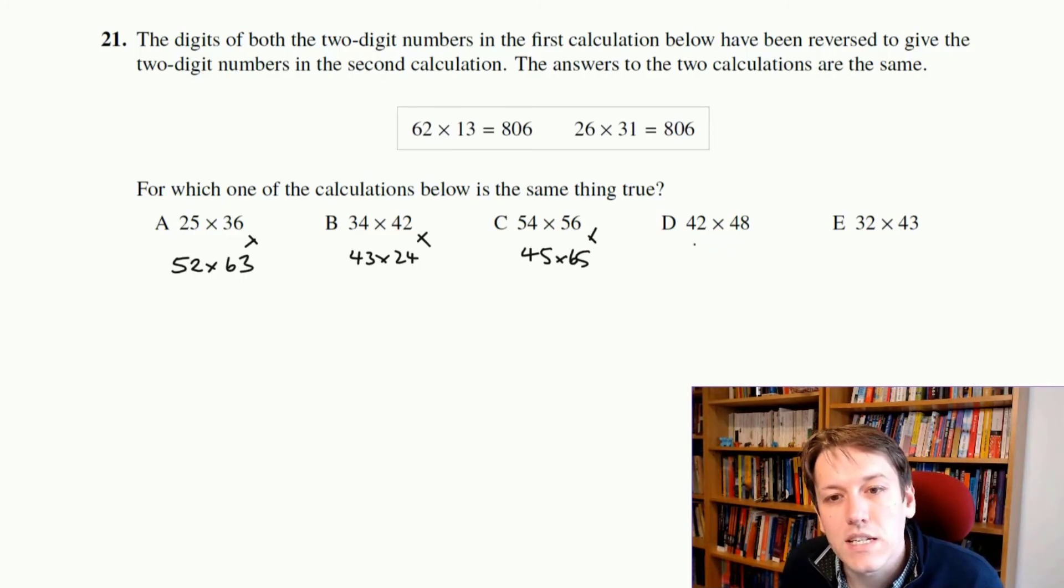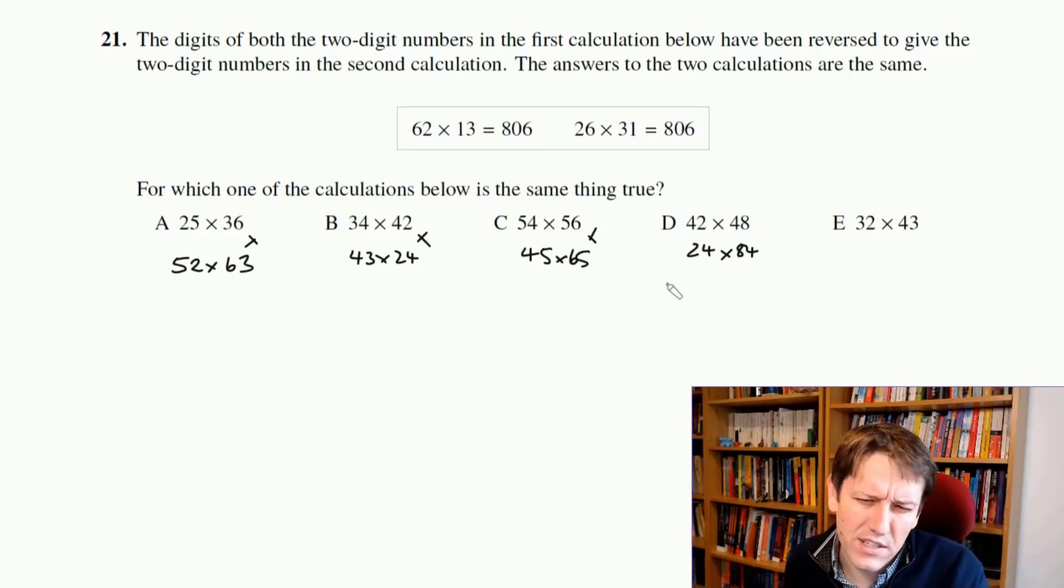42 times 48, 24 times 84 is what we're looking at here now, 2 times 8 is 16, 4 times 4 is also 16, so this one's a possibility. The last digit thing is only going to rule things out here, so I've either now got to check that these are actually the same, or I could just look at the last one here.